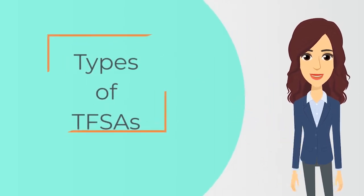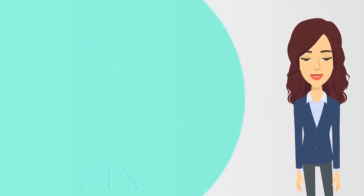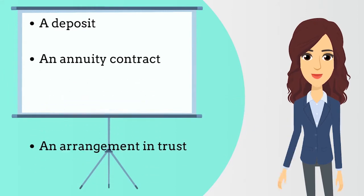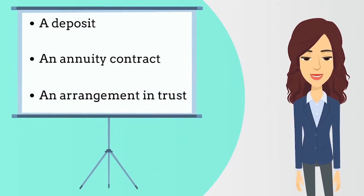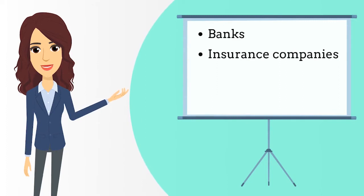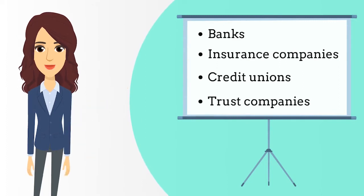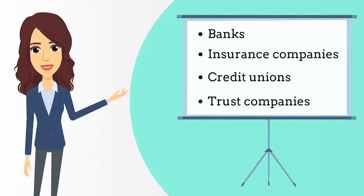There are three types of TFSAs that can be offered: a deposit, an annuity contract, and an arrangement in trust. Banks, insurance companies, credit unions, and trust companies can all issue TFSAs.